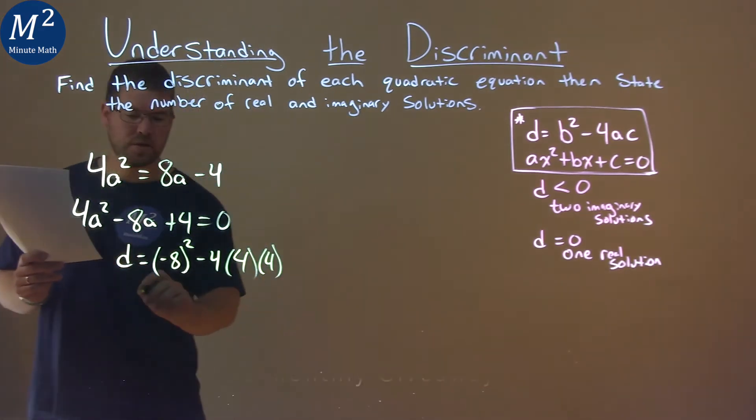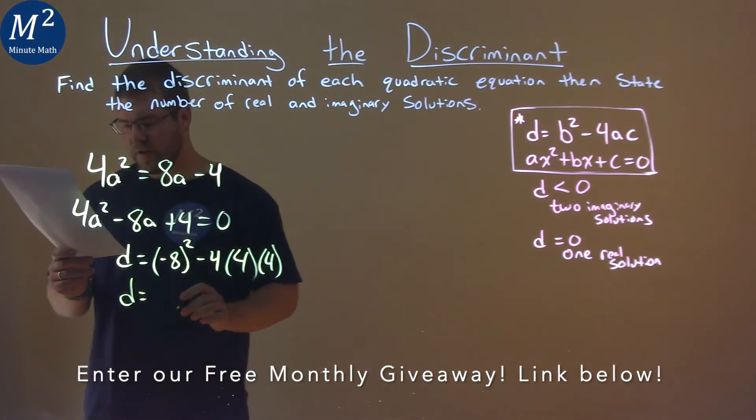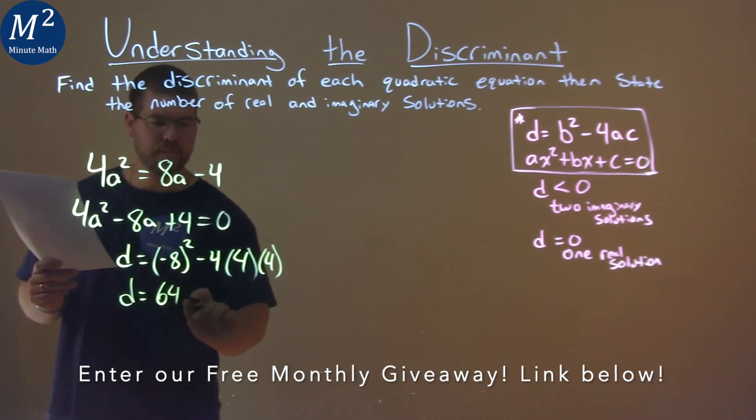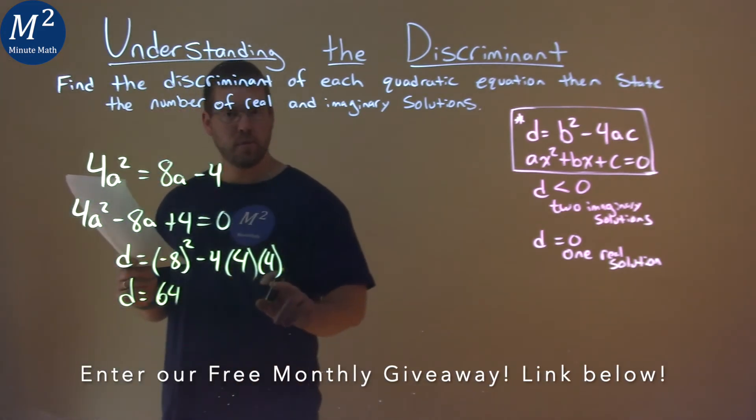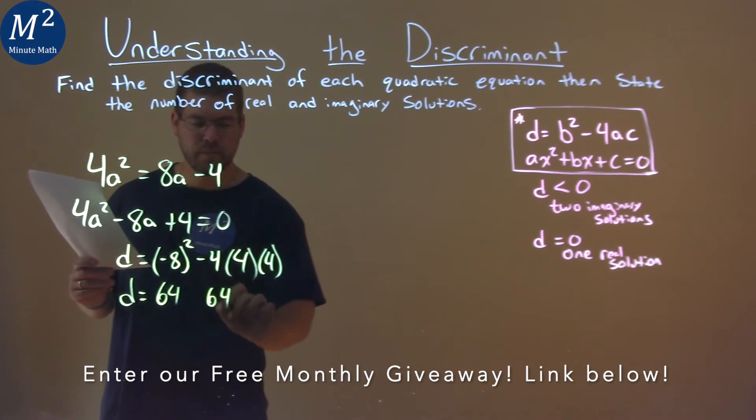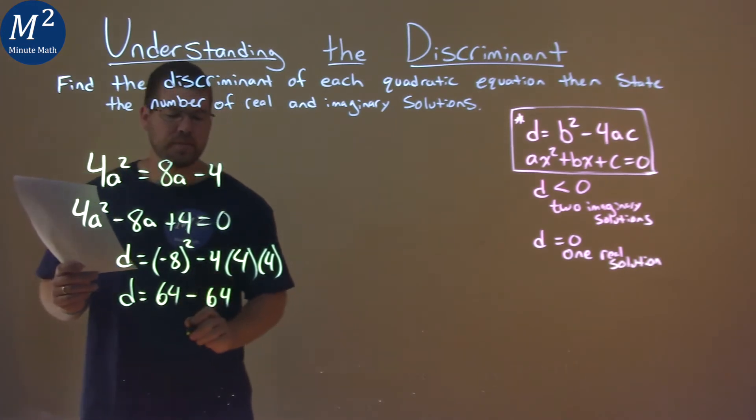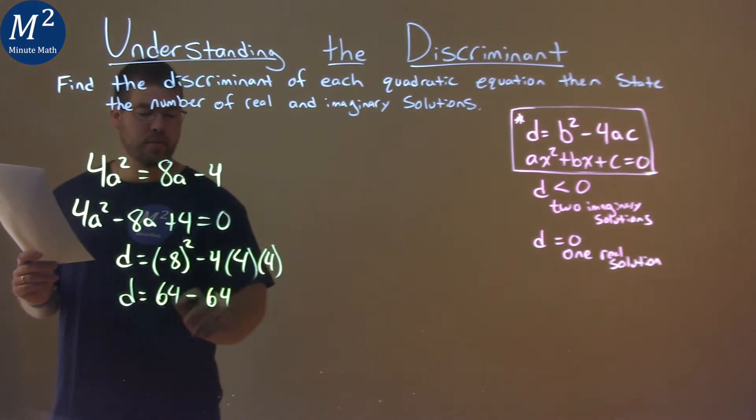And now we want to solve. Well, negative 8 squared is a positive 64. 4 times 4 times 4 is also 64. We subtract the two, so now we have 64 minus 64, which is zero.